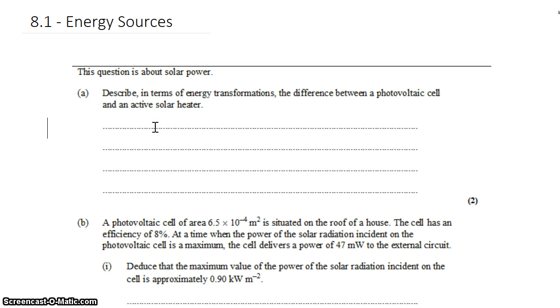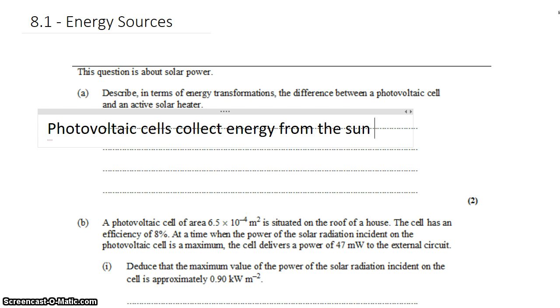So these seem like the same thing at first. These are the things that you put on your roof to collect energy from the sun, but they're actually different. Photovoltaic cells collect energy from the sun and convert it directly into electricity.